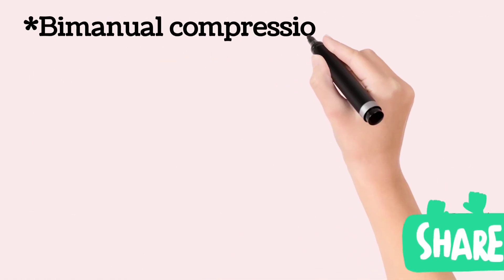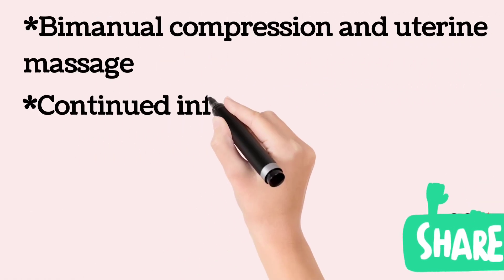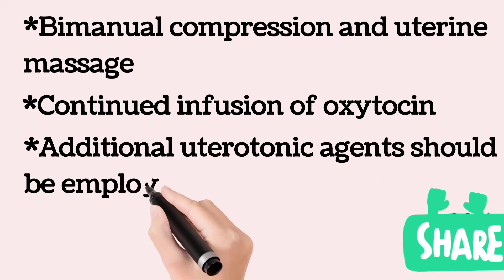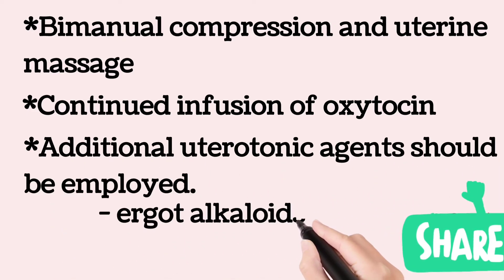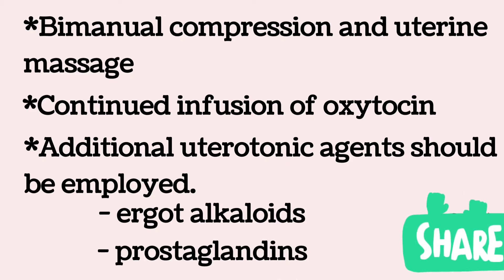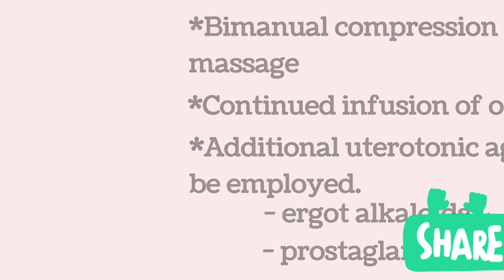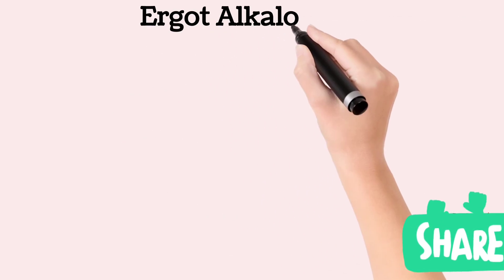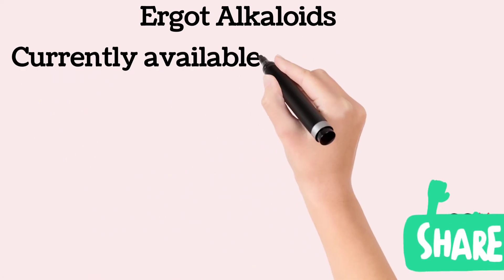Bimanual compression and massage of the uterus and continued infusion of oxytocin may help to restore uterine tone. Three classes of drugs are currently available for the treatment of uterine atony: oxytocin, ergot alkaloids, and prostaglandins. Ergometrine and methylergometrine are the two ergot alkaloids currently available for use.